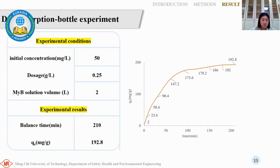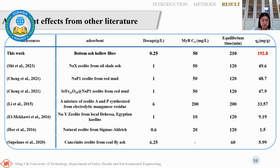Using the prepared biochar hollow fiber as adsorbent for dye adsorption in water, the batch adsorption experiment results show that maximum adsorption capacity can reach 192.8 mg per gram. Compared with other papers, the adsorption capacity demonstrates superior performance.